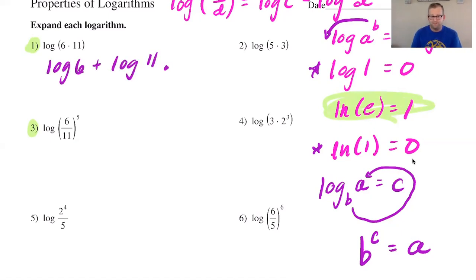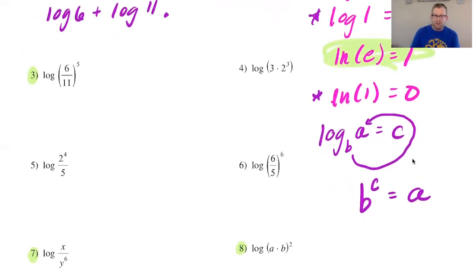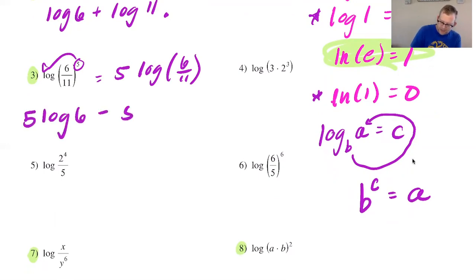In number three we want to expand this expression and I notice I have an exponent up here so I'm going to throw it out front and I'll get 5 log and then 6 over 11 and then since I'm going to expand it I'm going to write it all out and I'll get 5 log 6 minus 5 log 11.